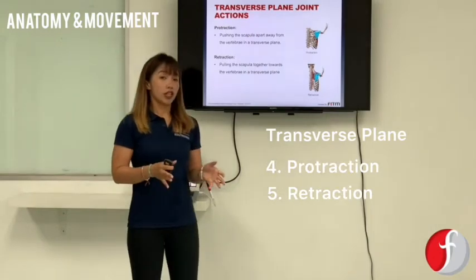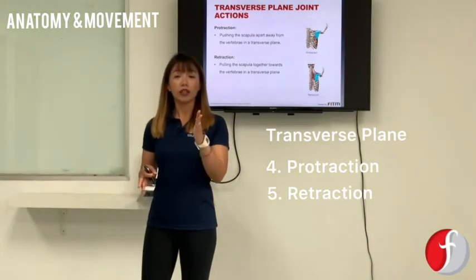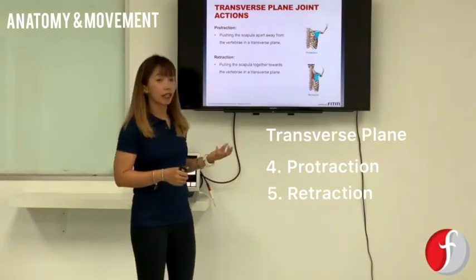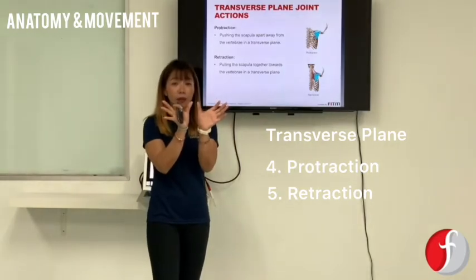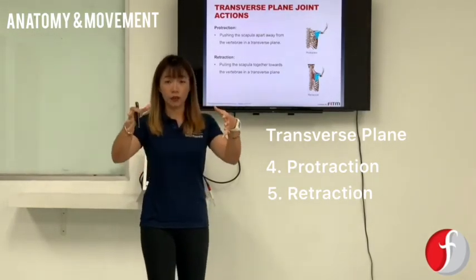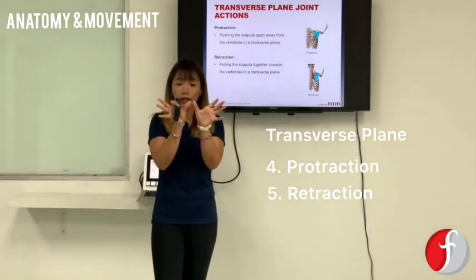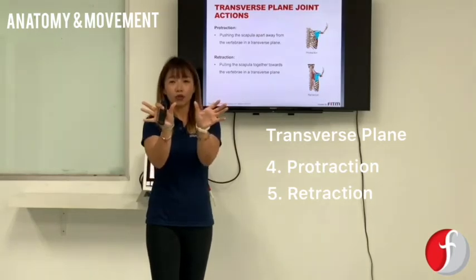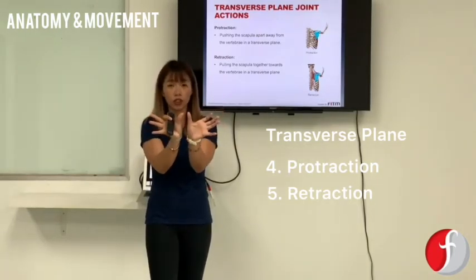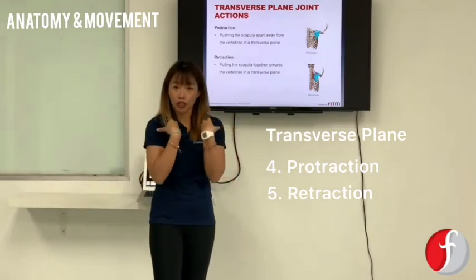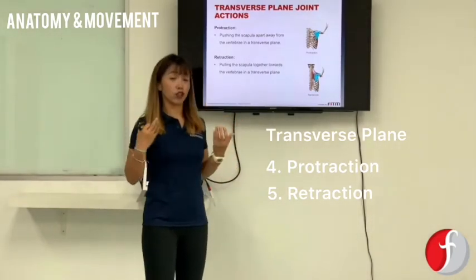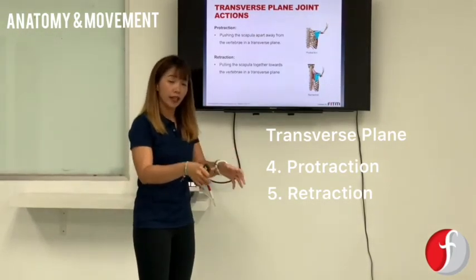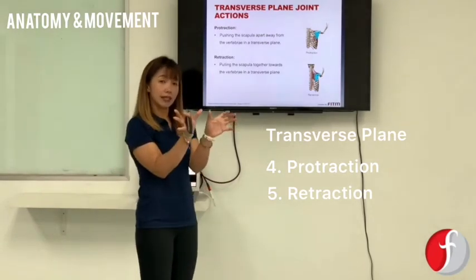We also have protraction and retraction, which only happen in the scapula. If I protract my scapula, I'm moving my scapulae away from each other in the transverse plane. If I retract, I bring my scapulae closer to each other. For example, when you do a bent-over row, as you lower down you have a slight protraction, and when you bring the bar towards your belly button you have a slight retraction.